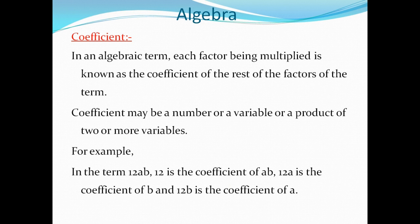Sixth, what is a coefficient? In an algebraic term, each factor being multiplied is known as the coefficient of the rest of the factors of the term. Coefficient may be a number, a variable, or a product of two or more variables. For example, in the term 12ab: 12 is the coefficient of ab; 12a is the coefficient of b; and 12b is the coefficient of a.